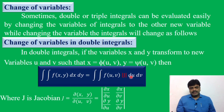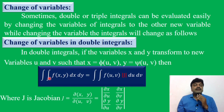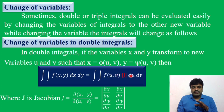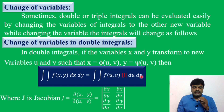So, ∬f(x, y) dx dy equals ∬f(u, v) |J| du dv. You always find the Jacobian value, substitute it here, and then evaluate the integration in du dv. This is the formula for double integrals.